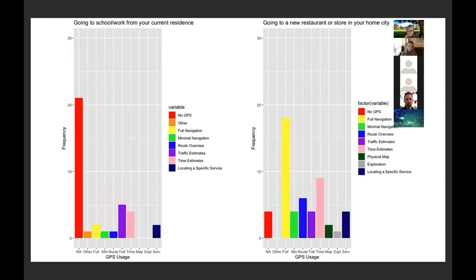The other two scenarios were in residential areas, where they likely had high familiarity of their surroundings. The first scenario is about usage traveling from their residence to school or work, and the other was traveling to a restaurant or store in their home city that was brand new. As expected from the home to work scenario, most participants responded that they don't use their GPS at all. But when we saw that traveling to a new place in their home city, participants were more likely to rely on GPS for turn-by-turn navigation, and there were more variations for supplementary usages.